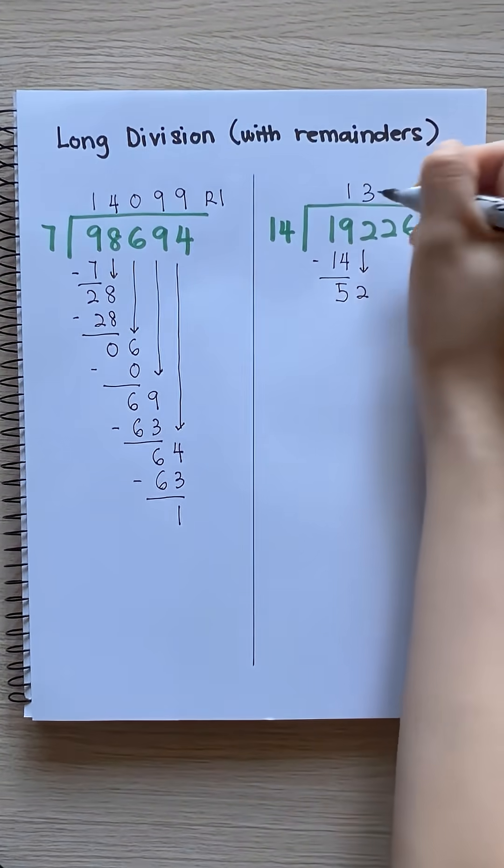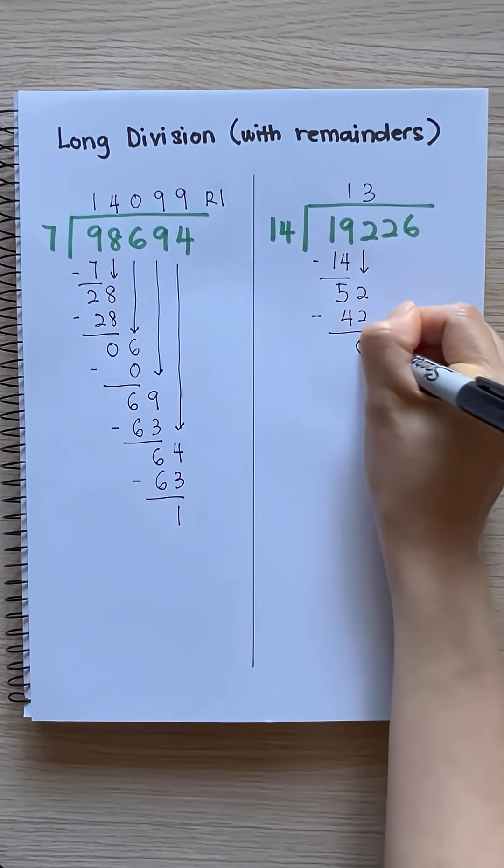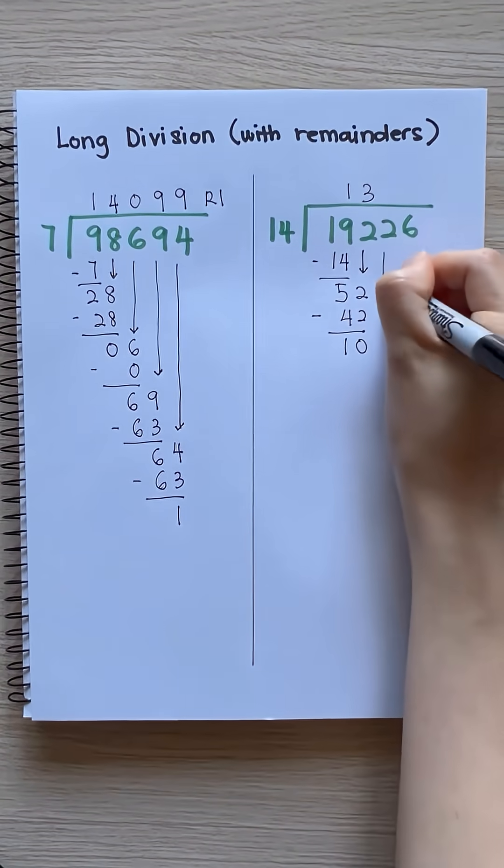14 times 3 equals 42. 52 minus 42 equals 10. Bring down 2.